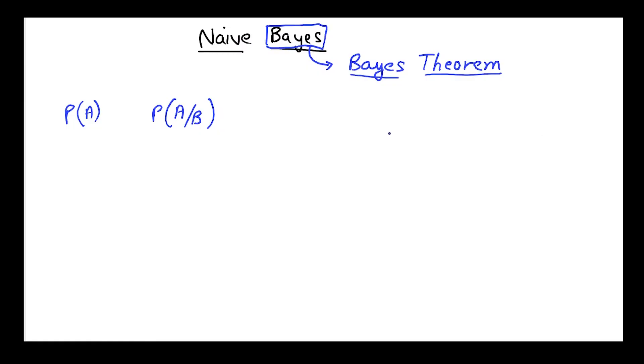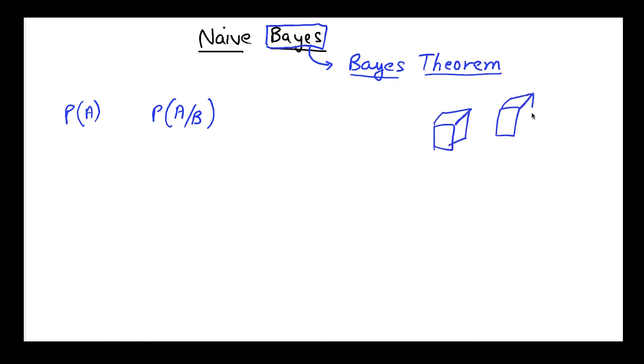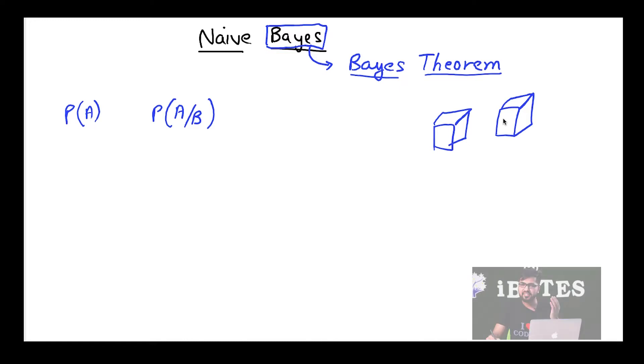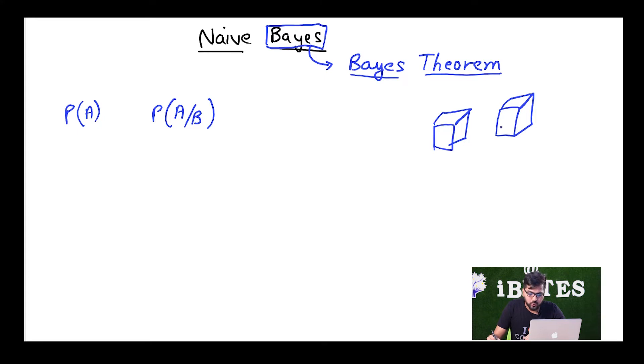To understand Bayes theorem, let's quickly look at a very simple example. Let's say we have two dice. A dice is basically a cube which has numbers from 1 to 6 written all over its faces. So let's say we have two dice. If I throw two dice on a table, what is the probability that both of them are going to have 6 on their top faces?